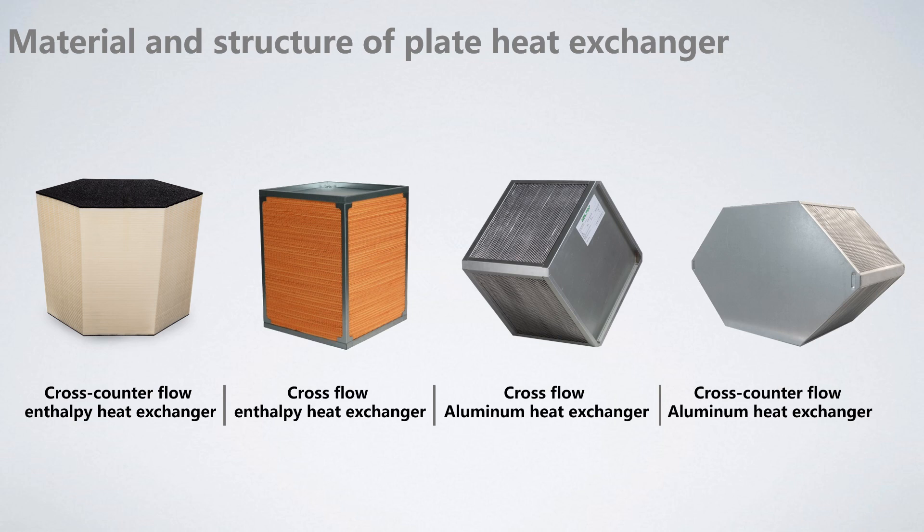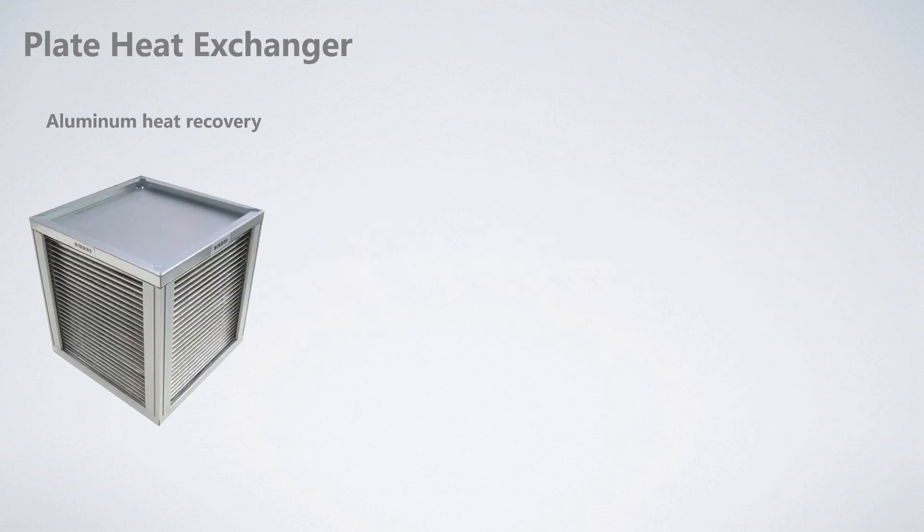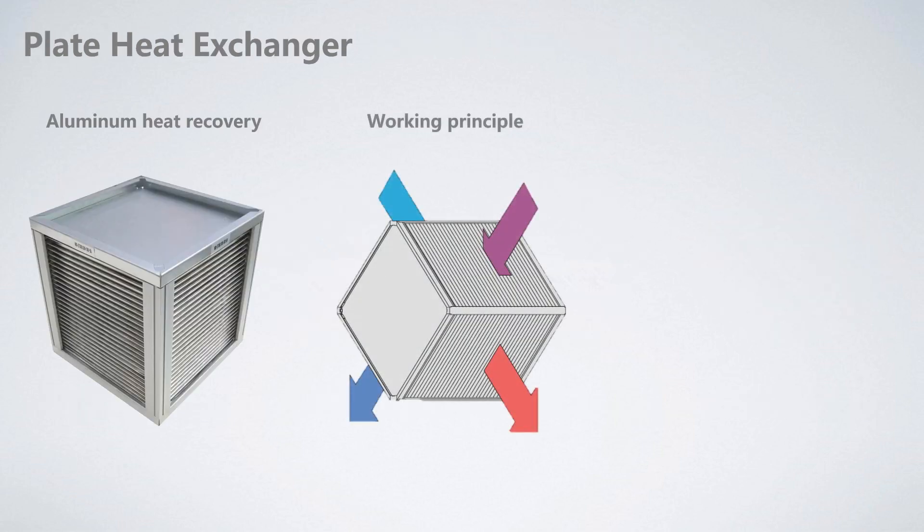Their working principles are similar. For example, like the cross flow aluminum heat exchanger, two neighbor aluminum foils form a channel for fresh air or exhaust air stream. Heat is transferred when the air streams flow crossly through the channels. Fresh air and exhaust air is totally separated.